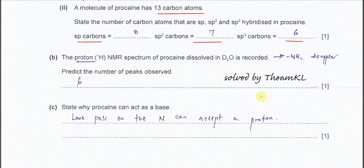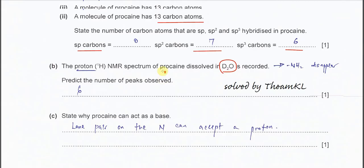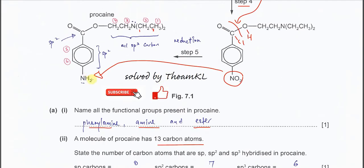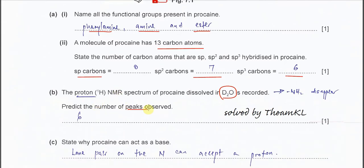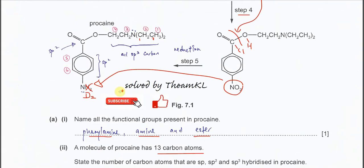Part B: the proton NMR of procaine dissolved in D₂O is recorded. When dissolved in D₂O, proton exchange occurs — the protons on the amine will exchange to D₂, forming ND₂, which gives no signal in the proton NMR. So only the other protons are observed. We count the signals: the two equivalent ethyl groups give signal one and signal two, since they are equivalent.